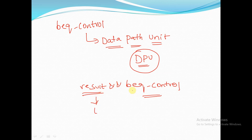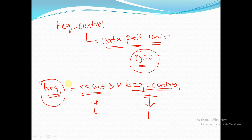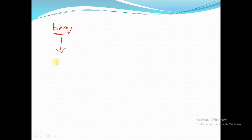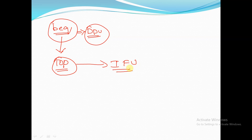If the result is 1 and the BEQ control signal is 1 (branch equal to instruction), the output BEQ signal is asserted to 1, telling the top module that the two register contents are equal. This BEQ control signal from the data path unit is passed to the top module.